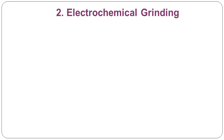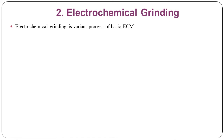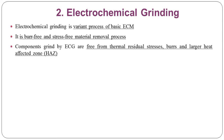We are now moving forward to Electrochemical Grinding (ECG). Electrochemical grinding uses electrical and chemical energy to grind and machine components. ECG is a variant process of basic ECM — Electrochemical Machining. It is a burr-free and stress-free material removal process. Components ground by ECG are free from thermal residual stresses, burrs, and large heat-affected zones. In both STEM and ECG, chemical and electrical energy is used, so heat produced during the machining process is absent, meaning thermal residual stresses and heat-affected zones are absent.